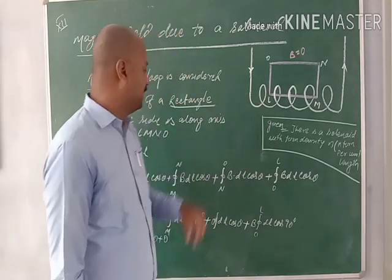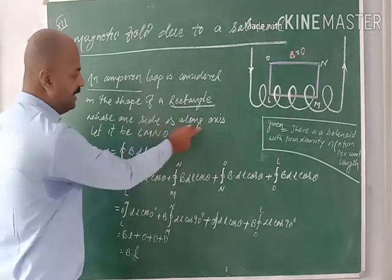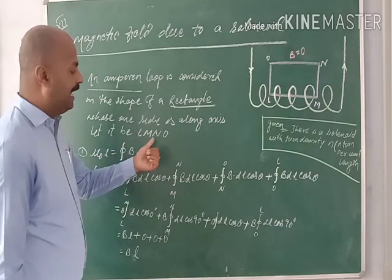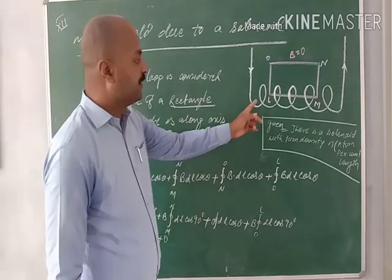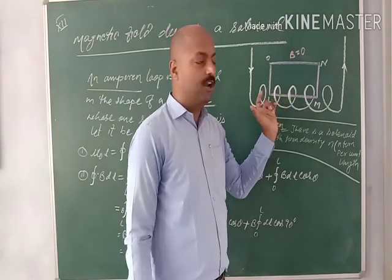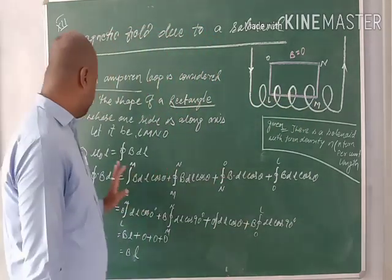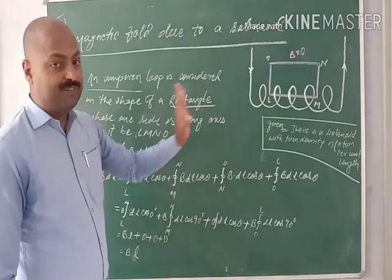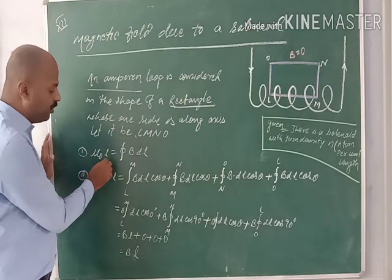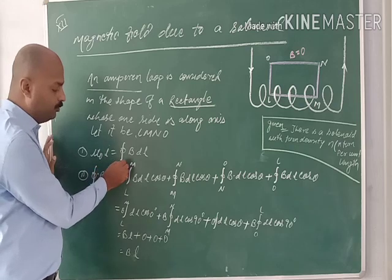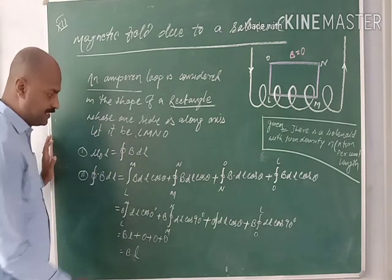We imagine this Amperian loop in the shape of a rectangle, with one side along the axis — let it be LMNO. LM is along the direction of the magnetic field. According to Ampere's circuital law, μ₀I is equal to the closed integral of B·dL·cos θ. So here we want to find out ∮B·dL.